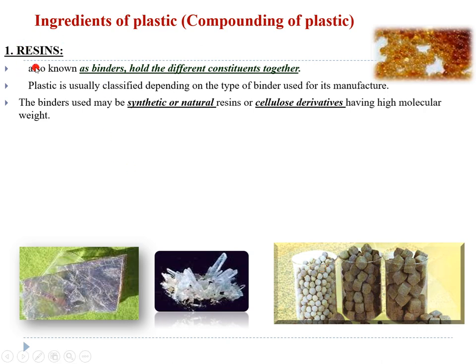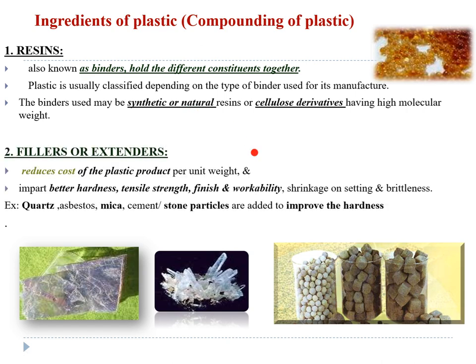The first ingredient is resins. What resins do is bind the plastic molecules and plastic particles together, so they are used as binders — they hold the different constituents together. Plastic is classified depending upon the binder which is used. The binders can be synthetic or natural; cellulose derivatives are some examples.